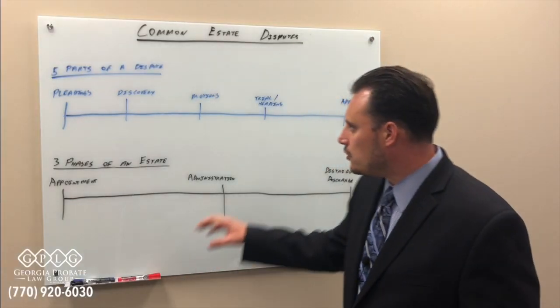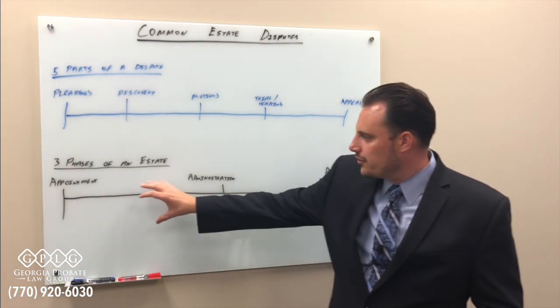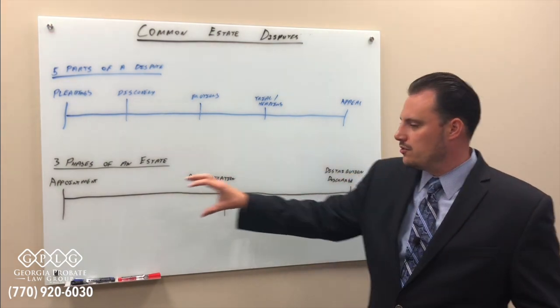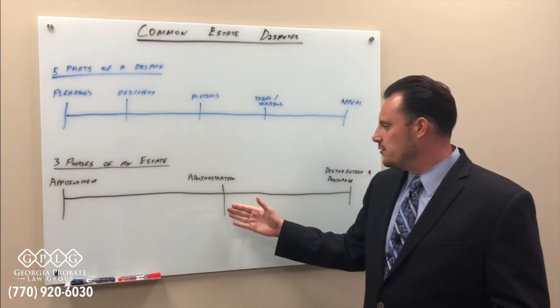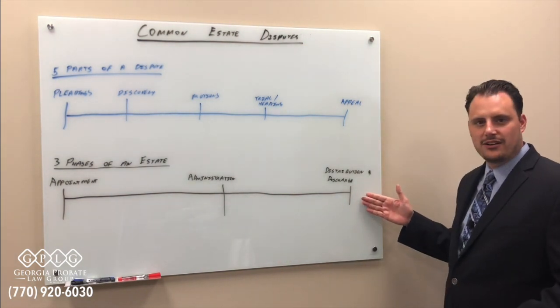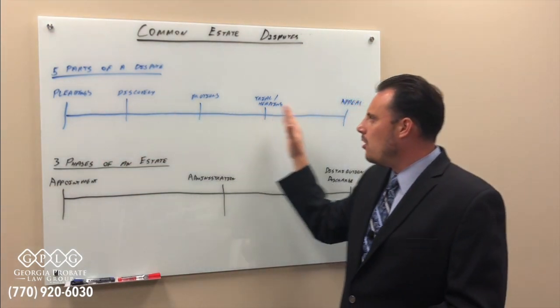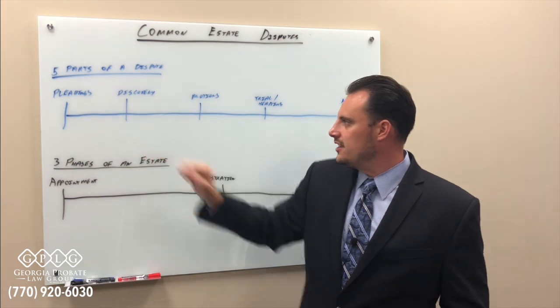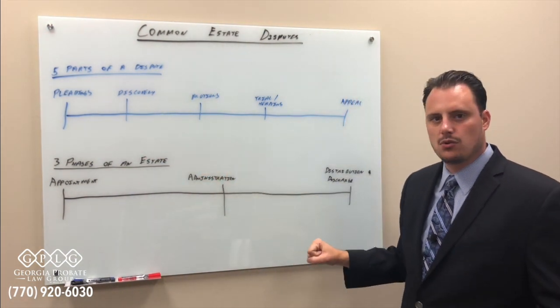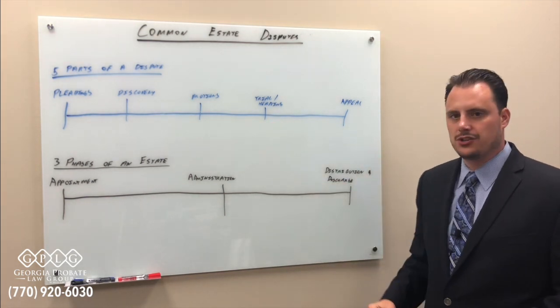So let's dive in. We've done a couple of other videos where we've talked about the three phases of an estate that every estate will go through where you have someone appointed to represent the estate, you then do the work of settling the estate, and finally you close the estate through distribution and discharge. We've also talked in a different video about the five parts of a dispute. You have pleadings where you make allegations, discovery where you do an investigation, motions where you ask the court to do something, the final trial or hearing of the matter, and then potentially an appeal.